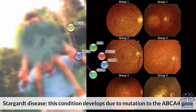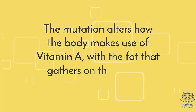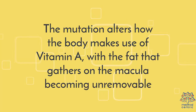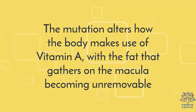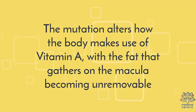Second, Stargardt disease. This condition develops due to a mutation to the ABCA4 gene. The mutation alters how the body makes use of vitamin A, with the fat that gathers on the macula becoming unremovable.